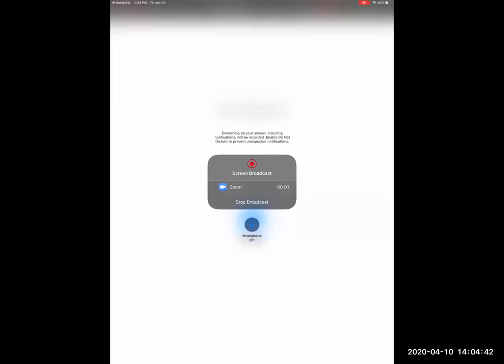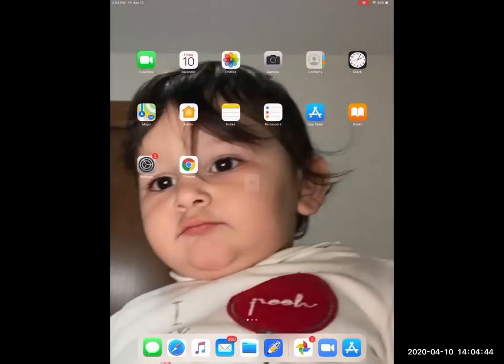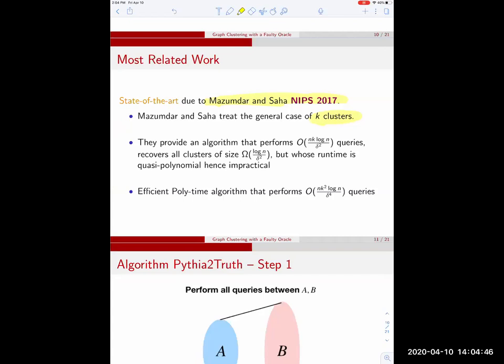I will continue the presentation. Mazumdar and Saha treat the general case of k-clusters and they have two results. On the one hand, they provide very optimal query complexity for non-adaptive algorithms, but the runtime is impractical. On the other side, they provide efficient polynomial time algorithm with suboptimal query complexity. For k equals 2, they perform n log n over delta to the fourth queries.